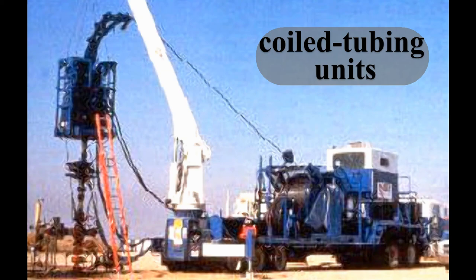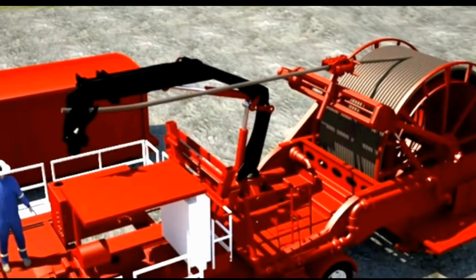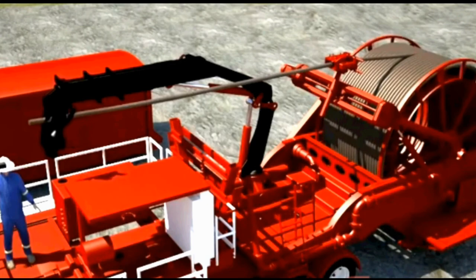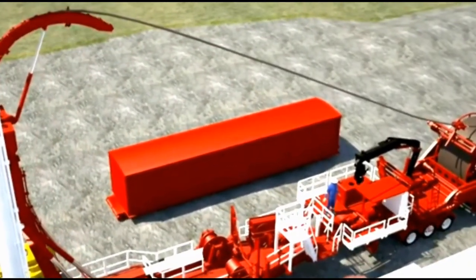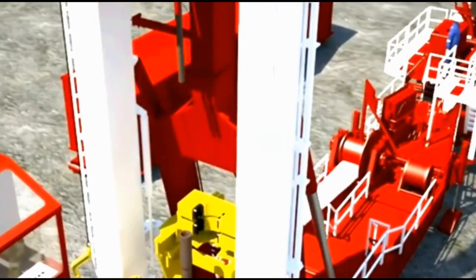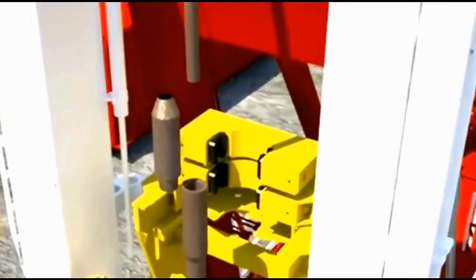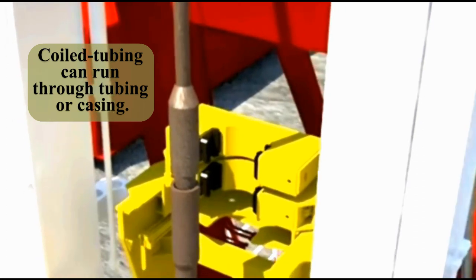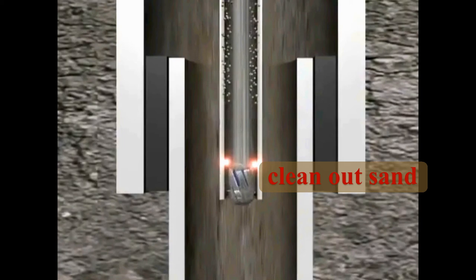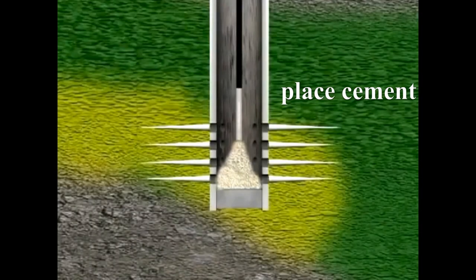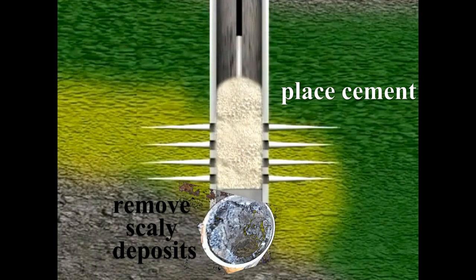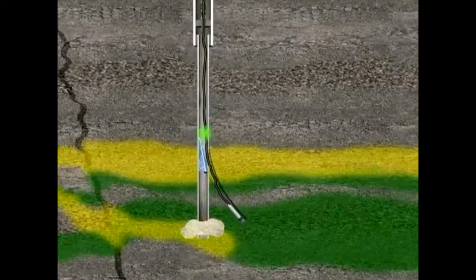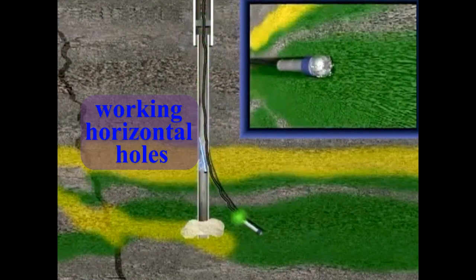Coiled tubing units: as you can see here, these units are small diameter — three and a quarter inch to one and a half inch — continuous tubing with no joints. Spooled off a reel into the hole, they can run either through tubing or through casing. Coiled tubing units can be used to clean out sand, place cement, or remove scaly deposits. They can also be especially useful for working horizontal holes.